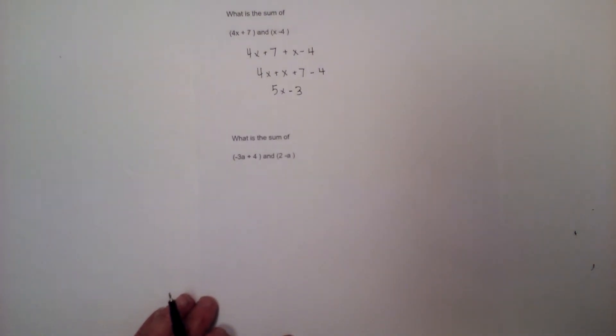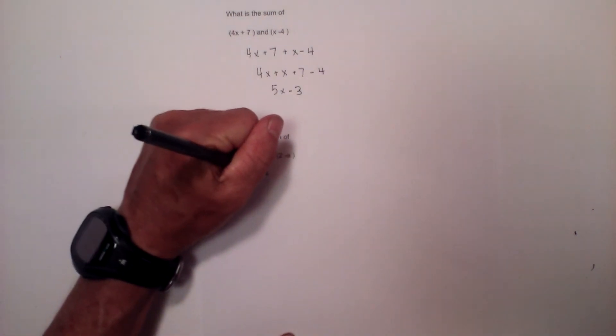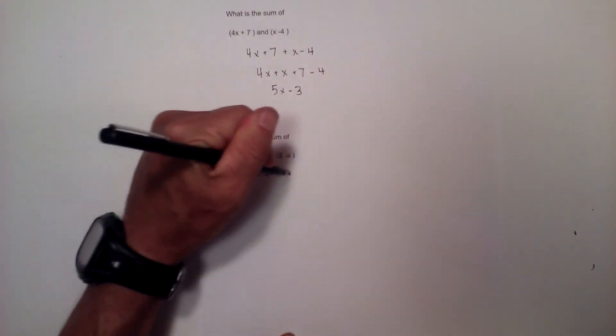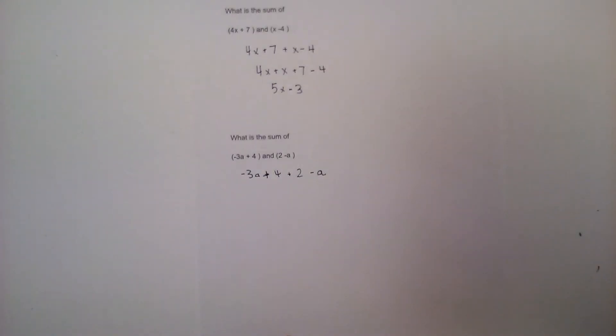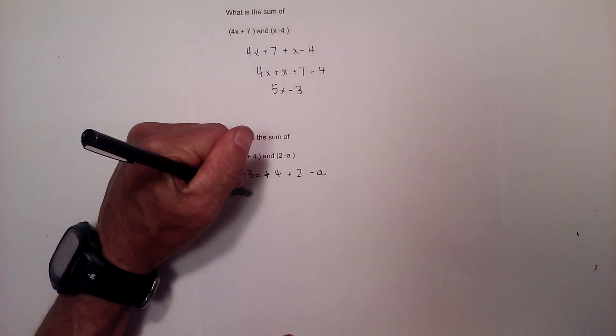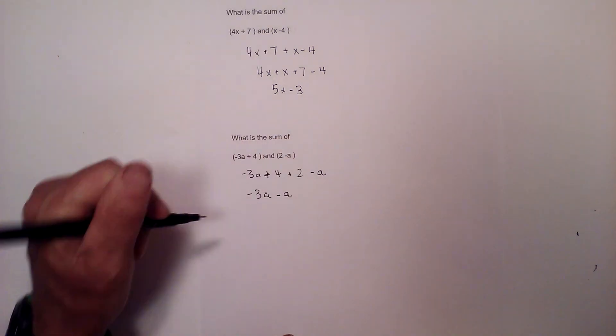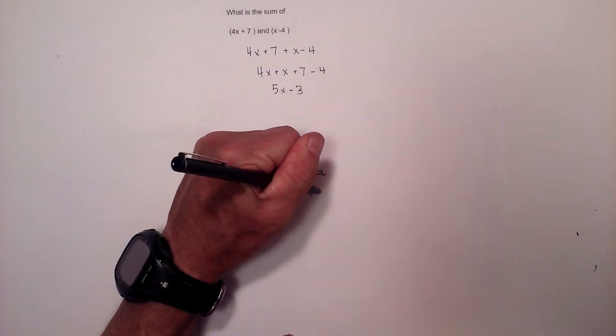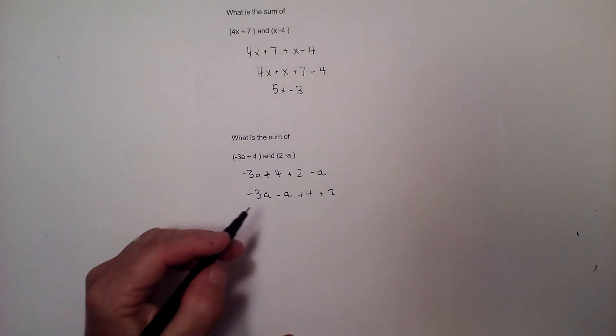Now let's move on to the next one. I am going to rewrite it: negative 3a plus 4 plus 2 minus a. Put like terms next to each other. Now you don't have to do this, I just think that helps eliminate some mistakes. That is a positive 4 and a positive 2.